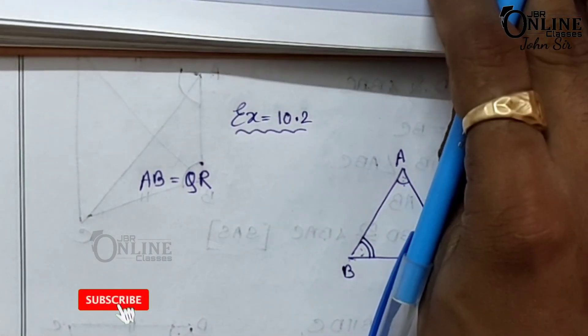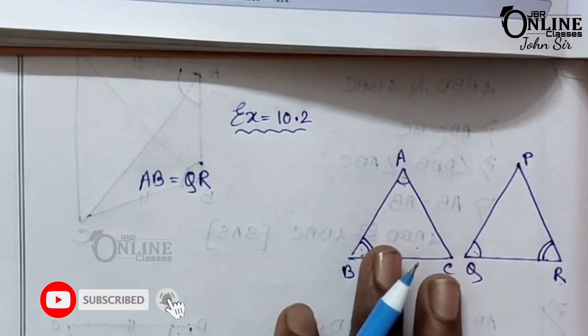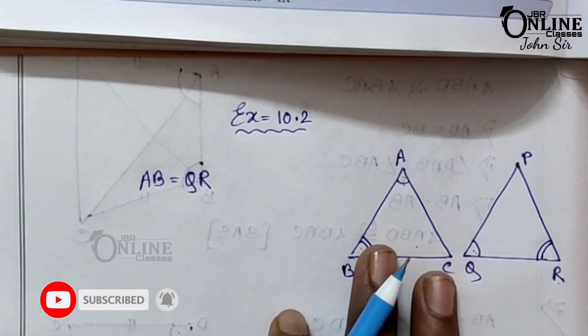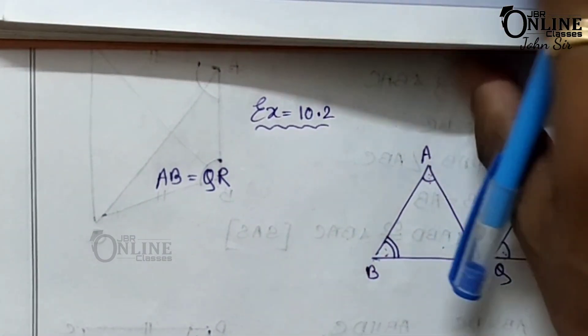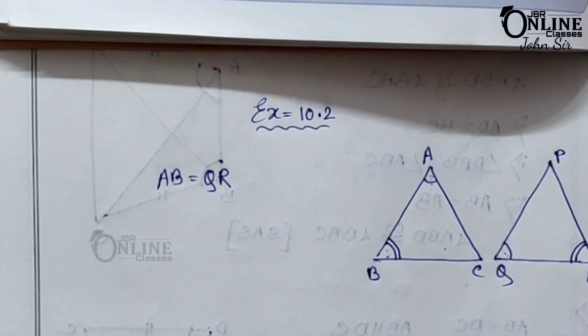Remember that only the included sides are equal. Now the second one, number two.